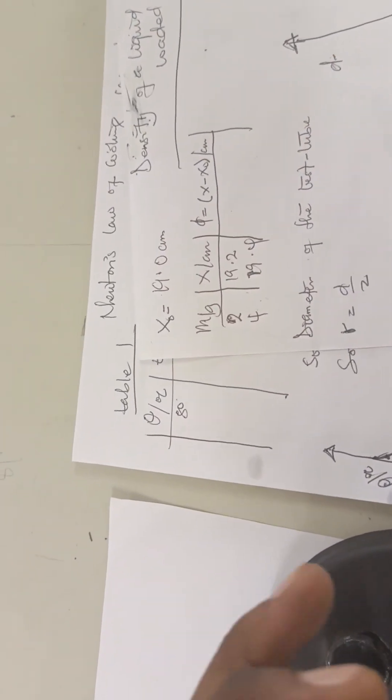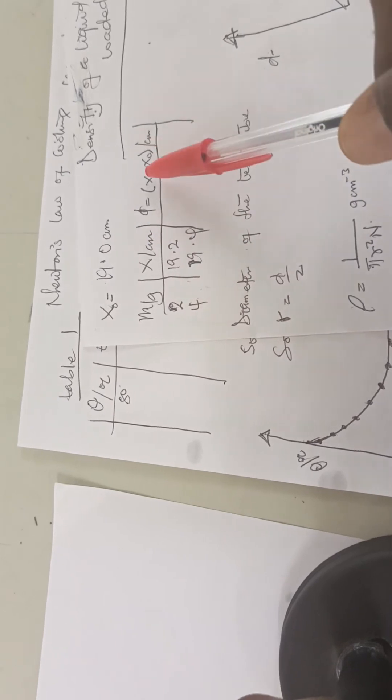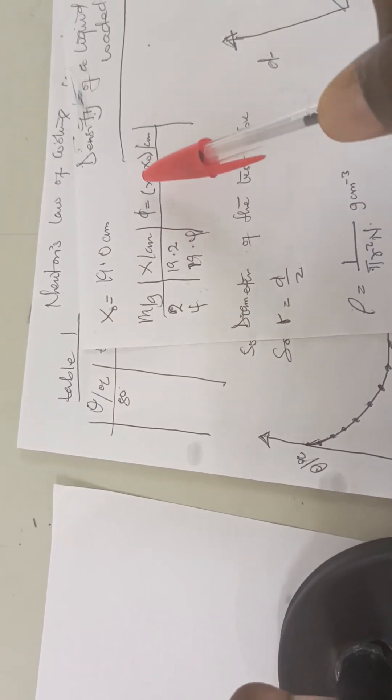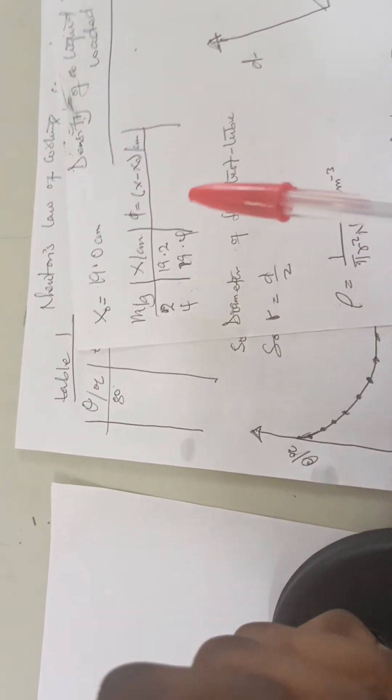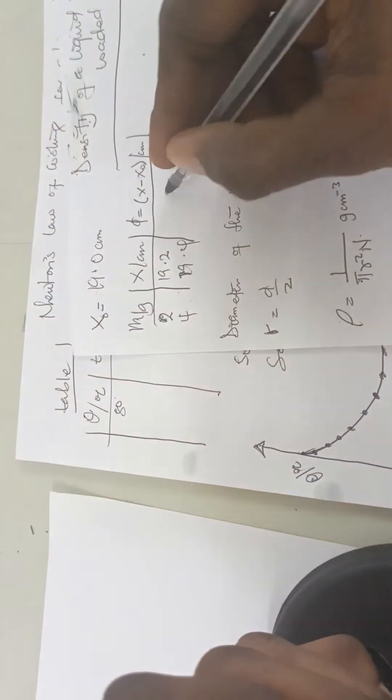X naught is not part of the table. Then after that, we do d. D is supposed to be the difference between x minus x naught, then write that one here.